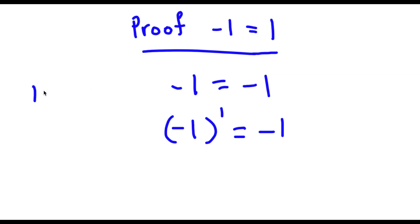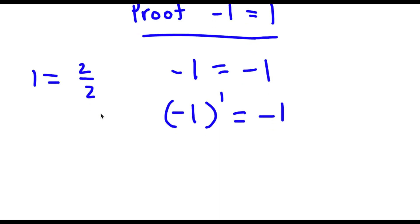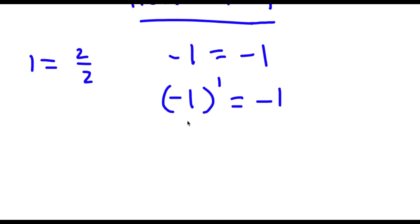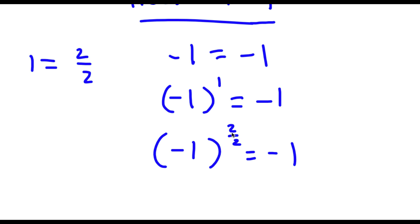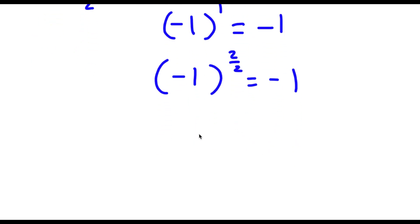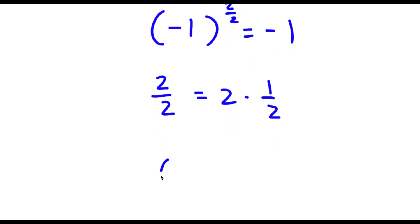And 1 is the same thing as 2 over 2. So if I replace 1 with 2 over 2, I get negative 1 to the power of 2 over 2 is equal to negative 1. And 2 over 2 is again 1, so it's the same thing as negative 1 to the power of 1. Now, 2 over 2 is the same thing as 2 times one-half. So if I replace 2 over 2 with 2 times one-half, I get negative 1 to the power of 2 times one-half equals negative 1.